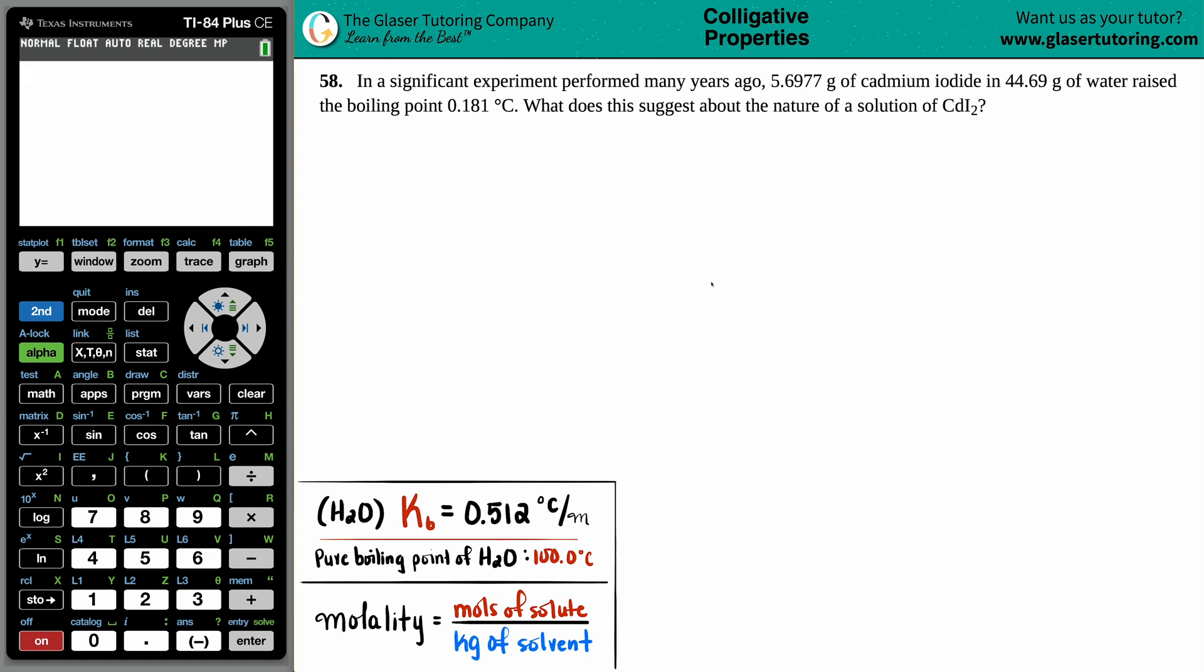Number 58. In a significant experiment performed many years ago, 5.6977 grams of cadmium iodide in 44.69 grams of water raised the boiling point by 0.181 degrees Celsius. What does this suggest about the nature of the solution of the CdI2, the cadmium iodide?